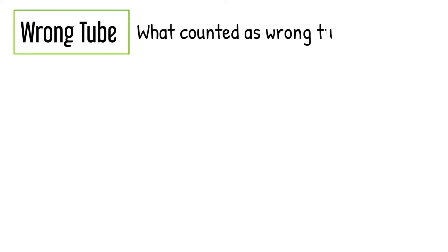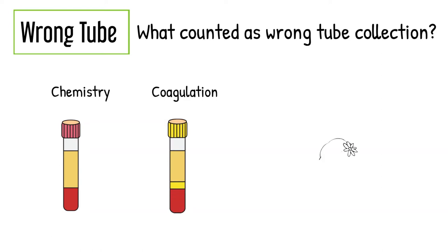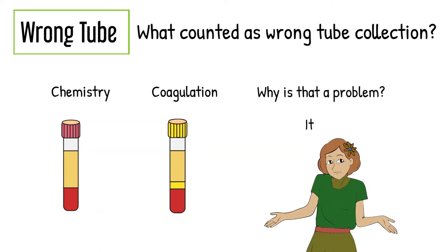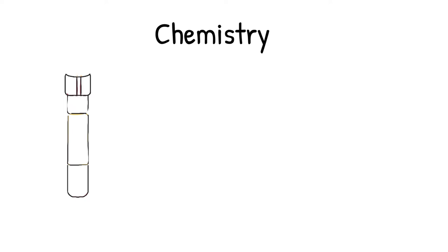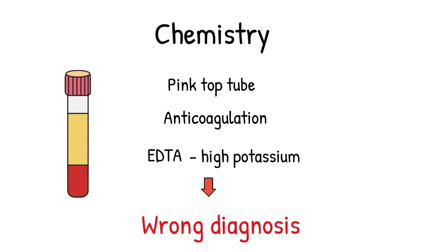Wrong tube collection. What counts as wrong tube collection? Chemistry samples collected in pink top tubes, or a coagulation sample collected in gel separator tubes instead of blue top tubes. The problem lies in the anticoagulant in each type of tube. Pink top tube has EDTA as anticoagulant inside. EDTA is rich in potassium. The level of potassium may be falsely elevated, leading to life-threatening medical mistakes if the pink top tube specimen is used for electrolyte testing.